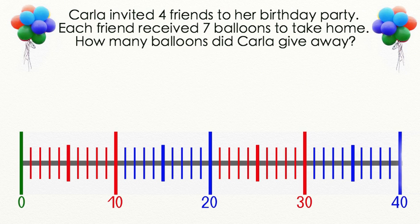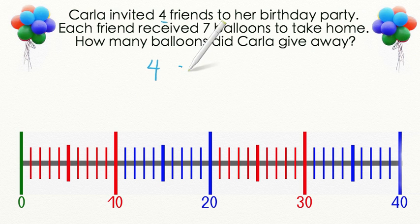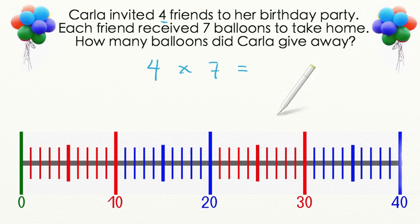Let's try a word problem together. Carla invited 4 friends to her birthday party. Each friend received 7 balloons to take home. How many balloons did Carla give away? Let's start by writing our equation. We have 4 friends that each received 7 balloons, so we have 4 groups of 7.